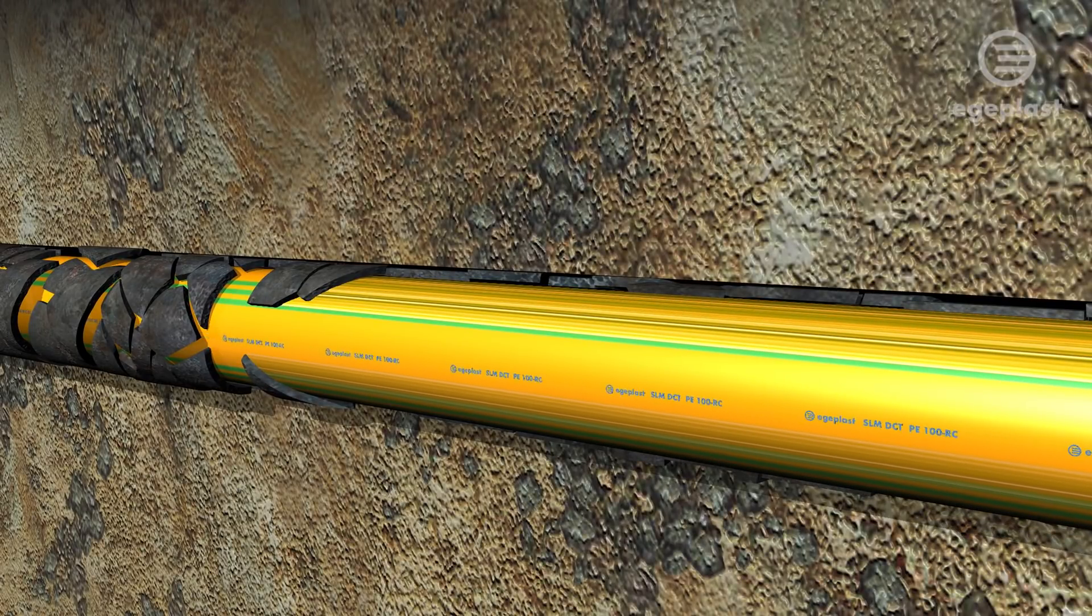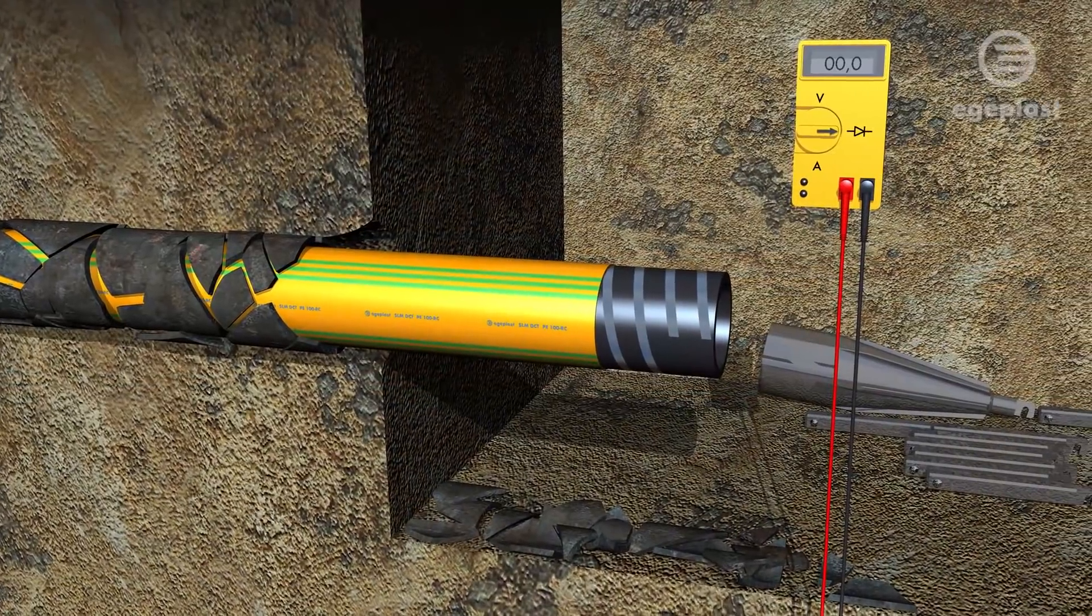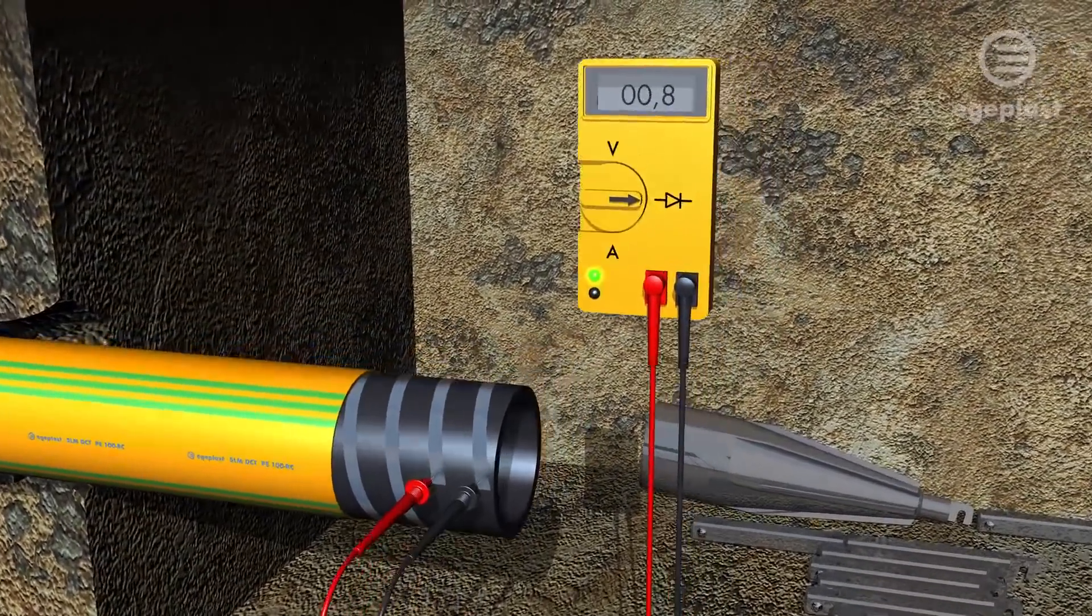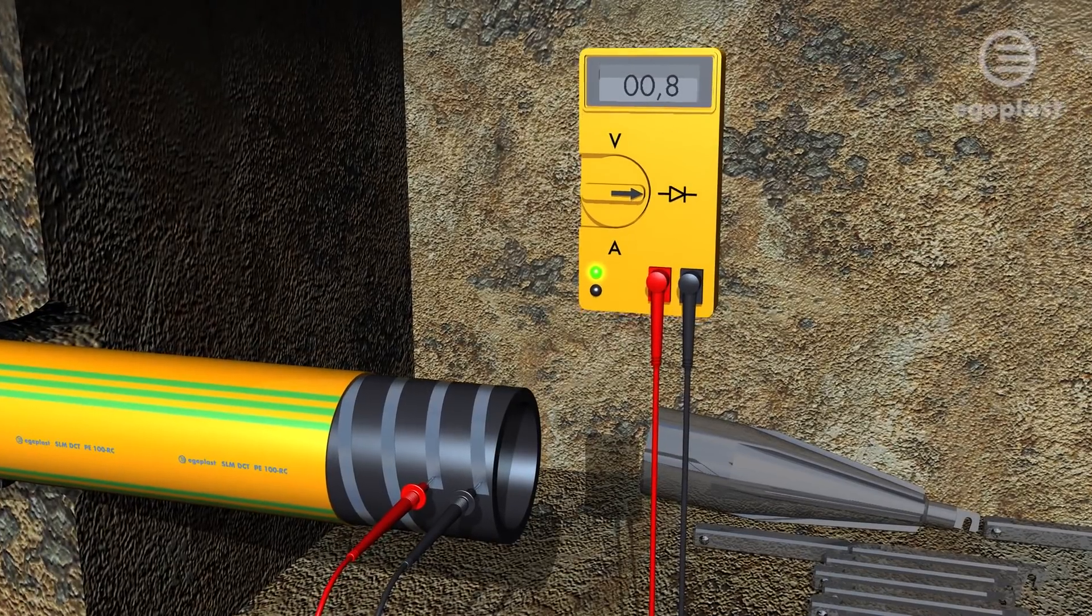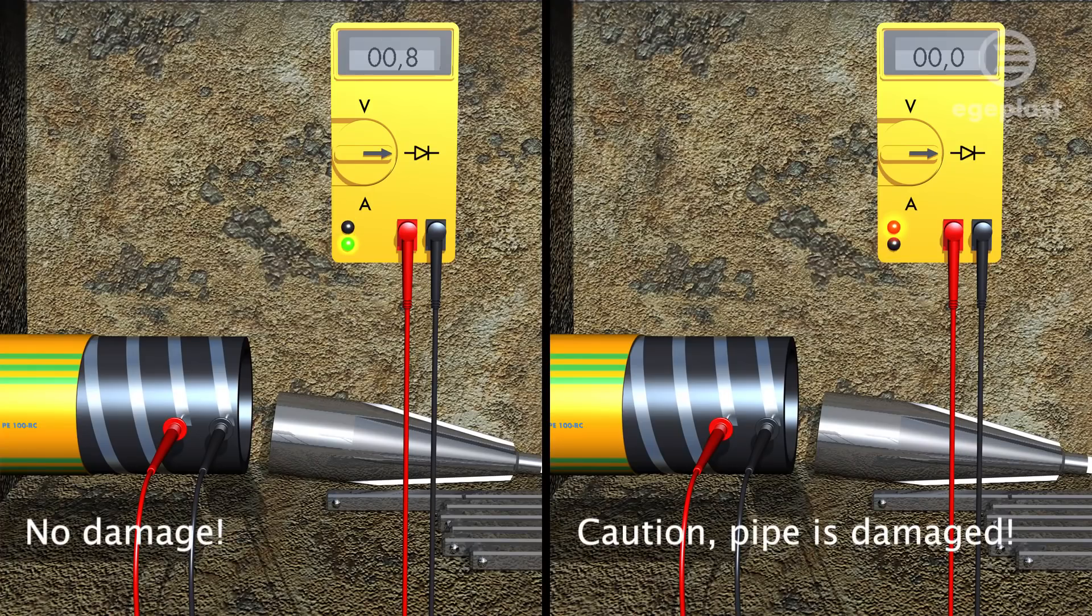Both the planner and the operator will not be aware of any damage that might have occurred. Thus having the possibility to verify the intactness of the pipe via electrical continuity testing with the help of integrated conductor strips means maximum safety for the full service life of the pipe system. If the electrical current is flowing, the pipe is intact.